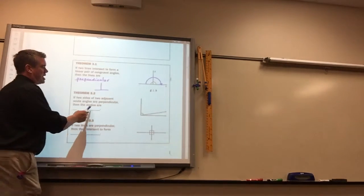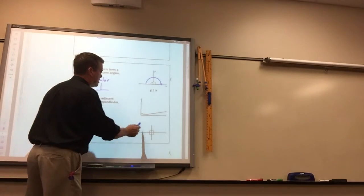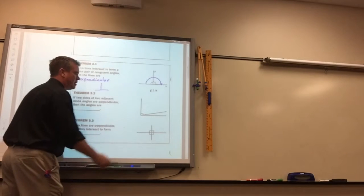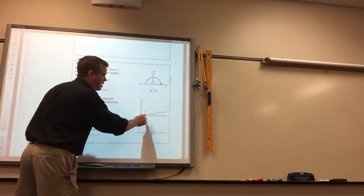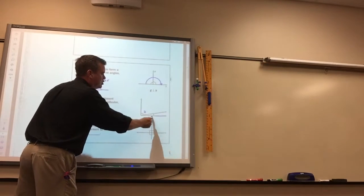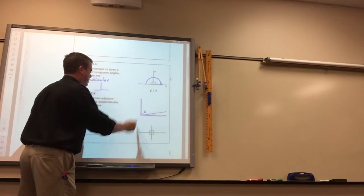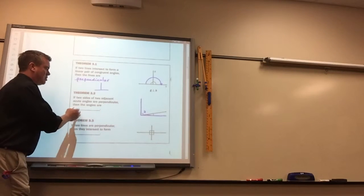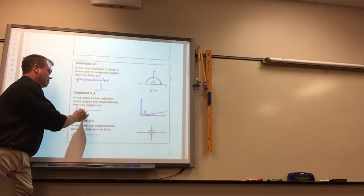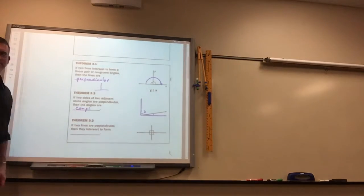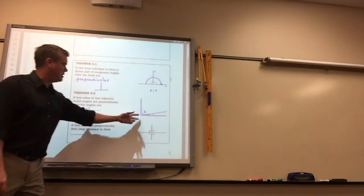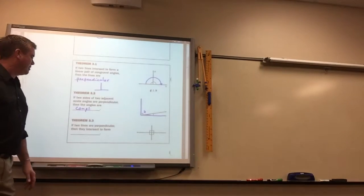Theorem 3-2. If two sides of two adjacent acute angles are perpendicular, so they have two angles here, one and two, and the two sides are perpendicular, then the angles are obviously complementary, right? Obviously. They've got to add up to 90 because it's perpendicular.